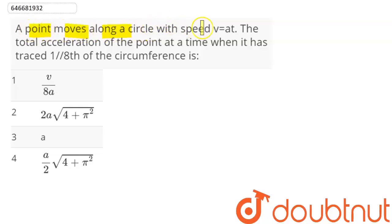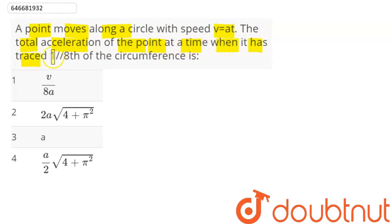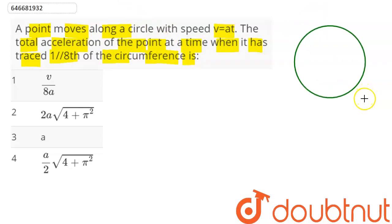The question is: a point moves along a circle with speed v equal to at. The total acceleration of the point at a time when it has traced one-eighth of the circumference is — hence we can say here, suppose this is our circular path.